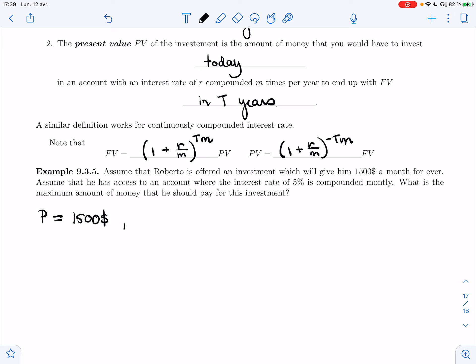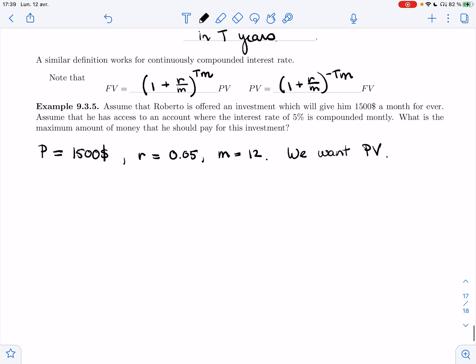So we have a payment of $1,500 a month. We have an interest rate of 0.05. We compound monthly. And we're asked for how much it's worth now. So we want the present value.